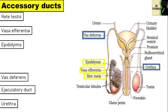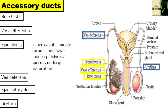The epididymis is a long and highly coiled tube which is differentiated into an upper caput, middle corpus and lower cauda epididymis. The sperms undergo maturation in the epididymis.